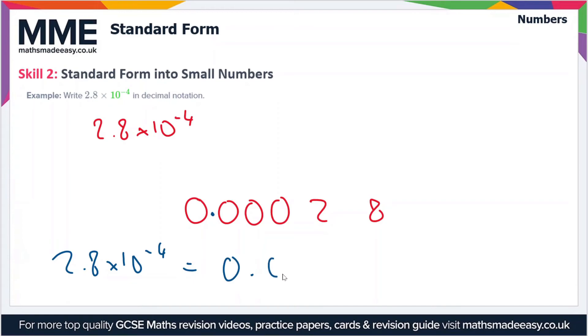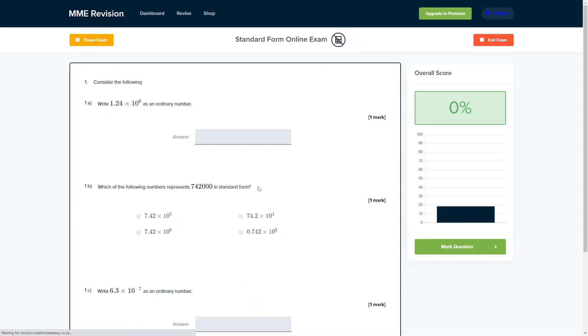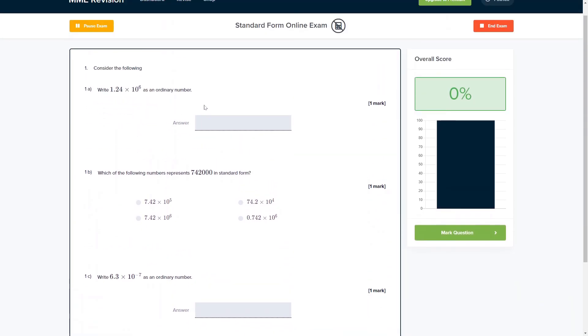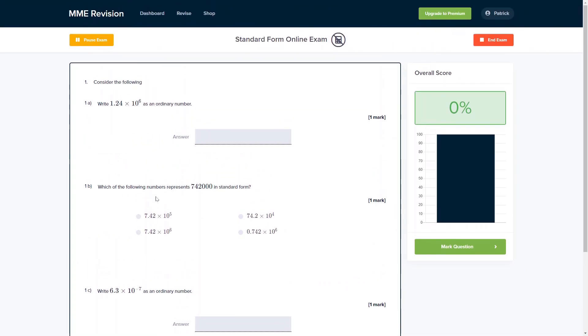Now standard form is an important skill, so it's important that you get a lot of practice. You can do so with our online exam which is available through our revision platform. If you take the test, you'll find loads of different questions to have a go at. There's a variety of different question types and you get instant feedback on each and every one of them. So it's a good way of keeping track of where you're going wrong, what your strengths are, what your weaknesses are, and how you can improve. So if this is something you're interested in, you should click the link below and it will take you straight there.